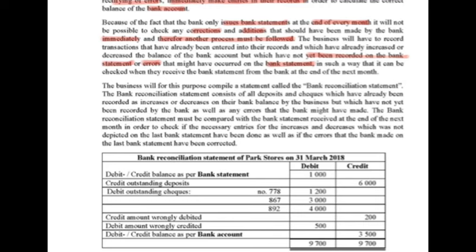For this purpose, the business will compile a statement called the bank reconciliation statement. The bank reconciliation statement is a statement where we keep information that is not yet on the bank statement, to check on it in the following month. It consists of all deposits and checks which have already been recorded as an increase or decrease in the bank balance by the business but have not yet been recorded by the bank, as well as any errors the bank might have made.